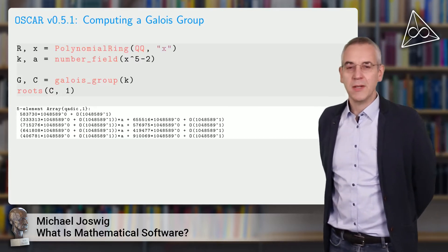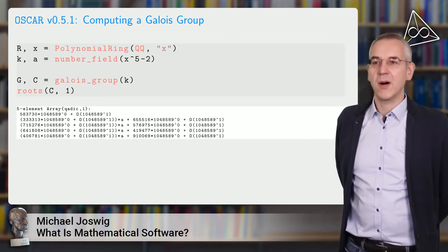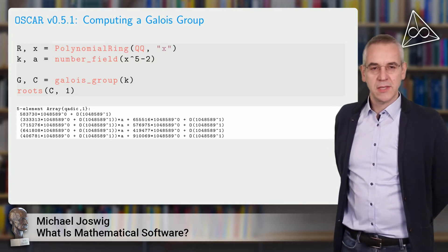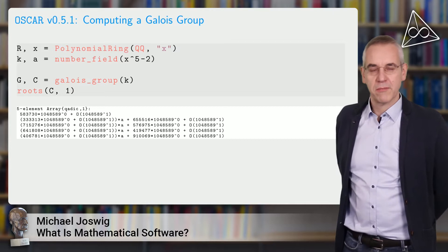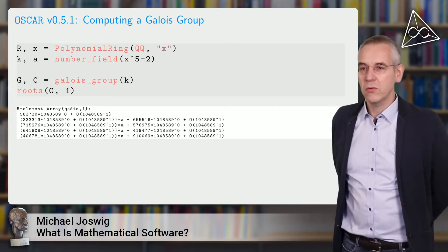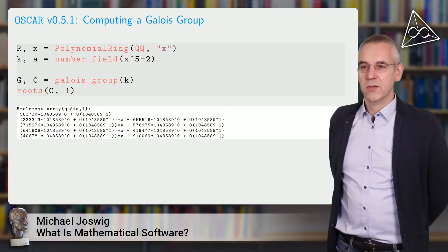You have four very different systems. And they have very different features. And we will look at some of this. The first example is OSCAR. From the version number 0.5.1 that you can see, you can tell that this is not really complete yet. But it exists. And you can do a lot of meaningful mathematics with it already. And the example that I chose here for you is the computation of a Galois group.